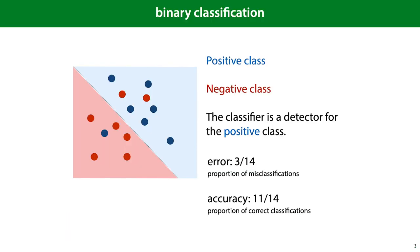In this video, we'll stick mainly to binary classification — that's classification with a positive class and a negative class. In that case, we can often think of the classifier as a detector for the positive class. We can look at two simple metrics for the performance of a classifier: the error, how many misclassifications it makes, and the accuracy, how many examples it gets right. Most of the things we talk about in this video are not specific to classification and also hold for regression experiments.